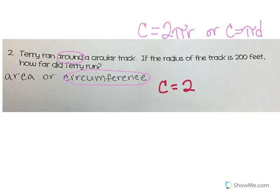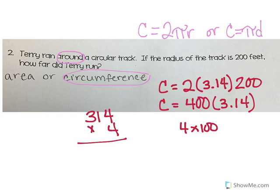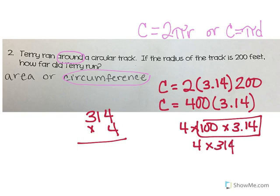So I'm going to use C equals 2, and I'm going to use 3.14 for pi, times my radius, which is 200. I'm going to make it easier and do 2 times 200 first — that's C equals 400 times 3.14. I know that multiplying 3.14 times 400 is the same as 314 times 4, because 400 is 4 times 100. So: 4 times 4 is 16, carry my 1, that's 5, and 4 times 3 is 12.